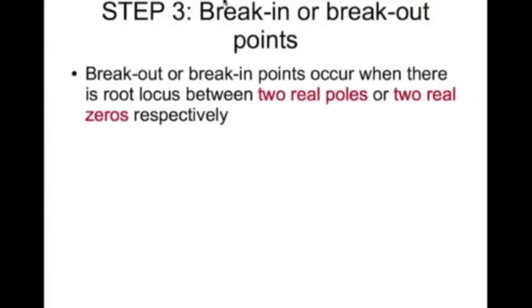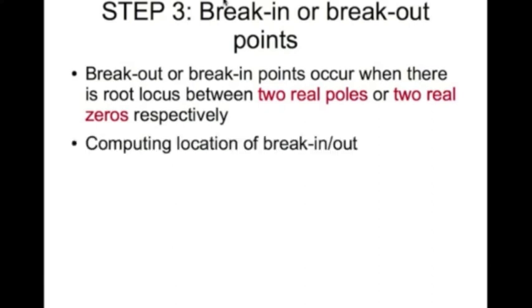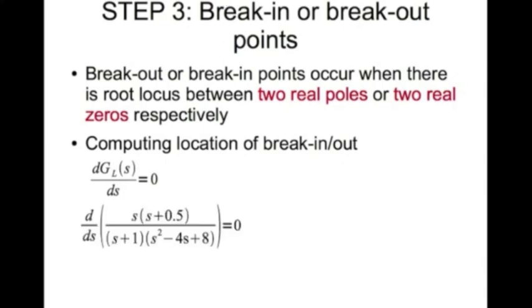Step three is to find the break-in or break-out points. Break-out or break-in points occur when there is root locus between two real poles or two real zeros respectively. Our loop transfer function is s times (s + 0.5) divided by (s + 1) times (s² − 4s + 8).